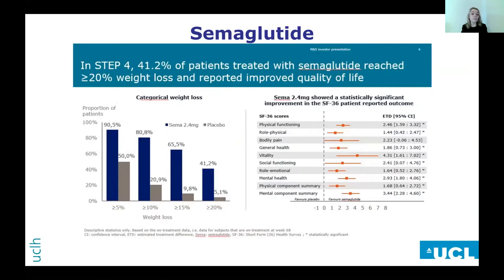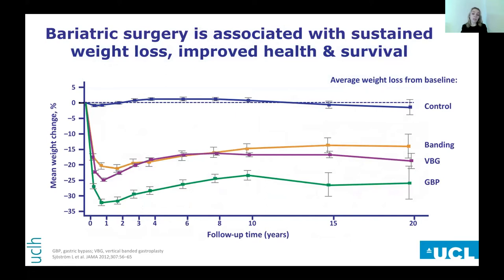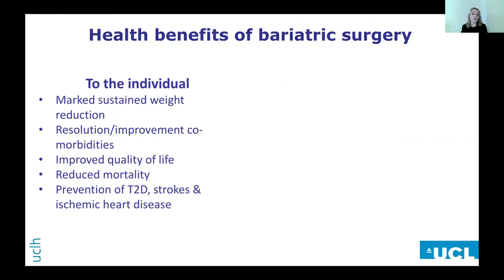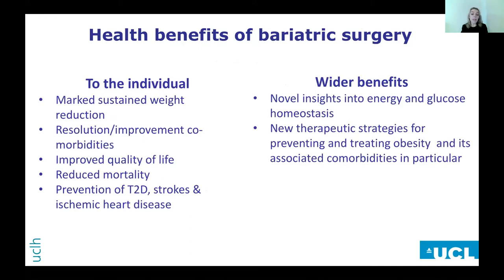There is real excitement with regards to pharmacotherapy. Bariatric surgery is currently the most effective treatment for people with severe obesity, as illustrated out to 20 years of data. Bariatric surgery produces marked health benefits with resolution or remission of the majority of obesity complications and an overall 40% decrease in mortality. For type 2 diabetes specifically, it reduces long-term complications. The health benefits to bariatric surgery are to the individual but also much wider — if we can understand how bariatric surgery engenders these effects, we can develop new treatments for obesity and type 2 diabetes.